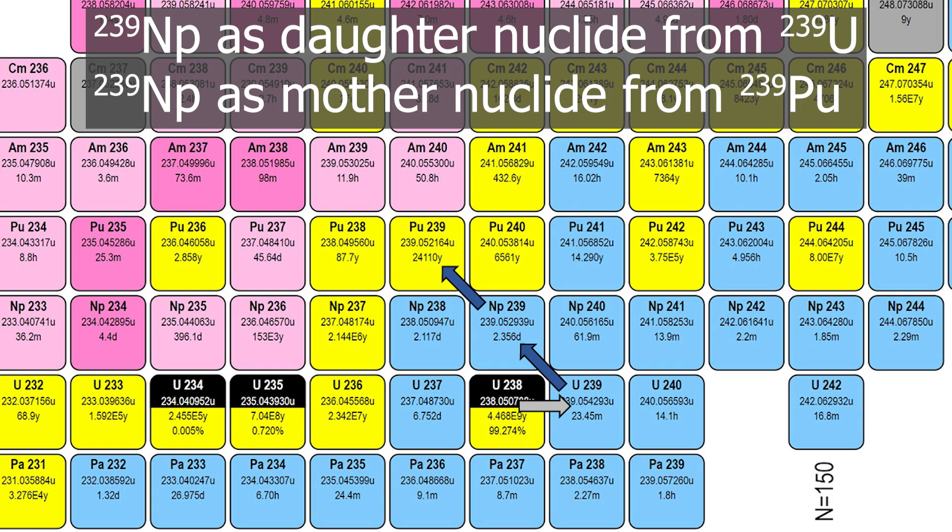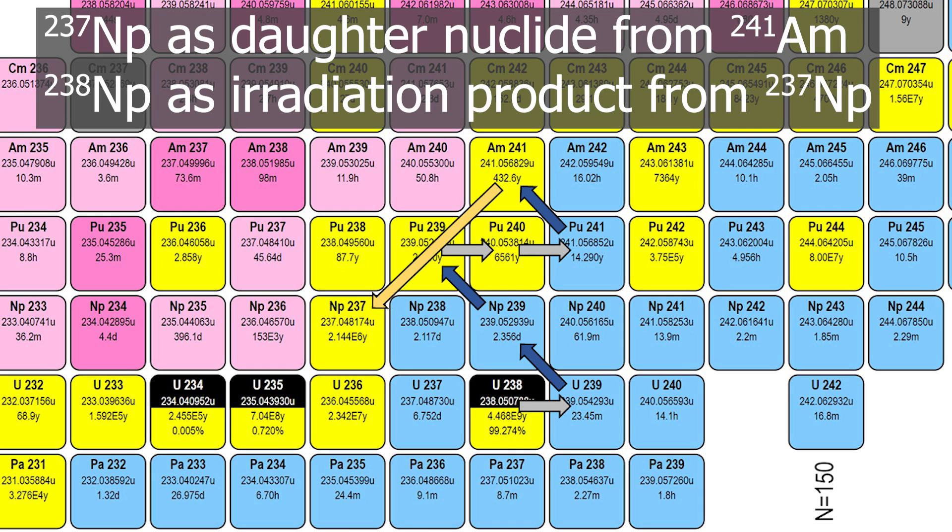Neptunium-237, as the daughter nucleus of Americium-241, is much more interesting. It has a half-life of 2.14 million years.